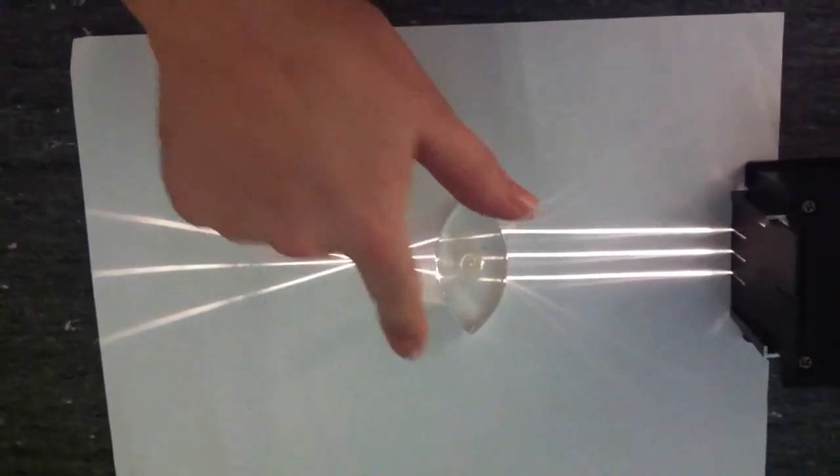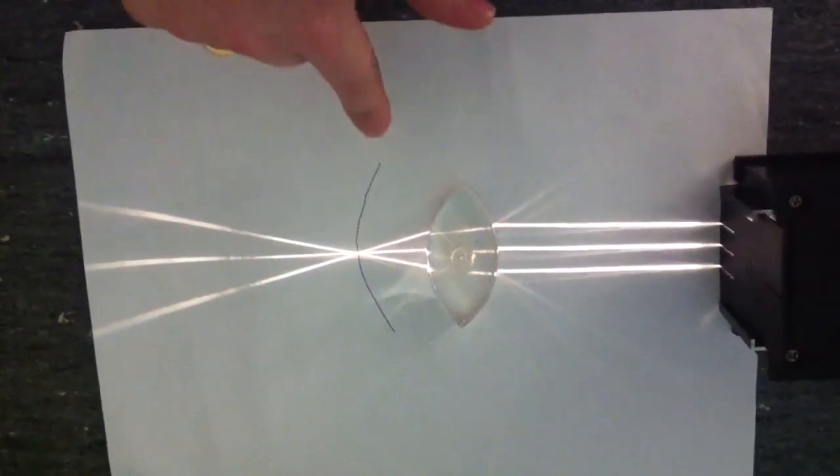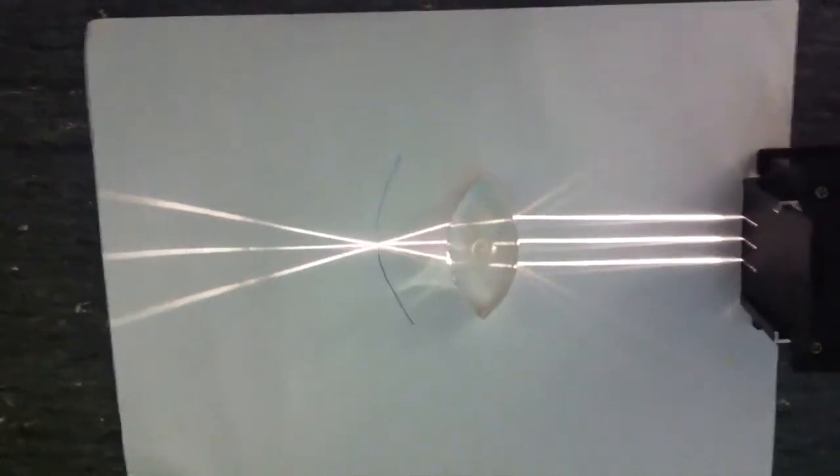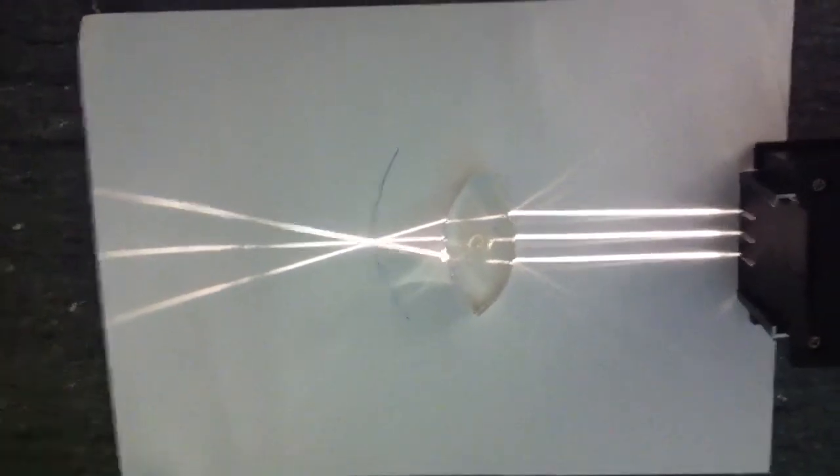And this line, where the light is focused, represents the retina of the eye. This person can see lovely and clearly, not blurry at all.